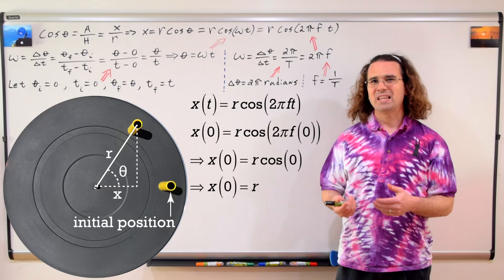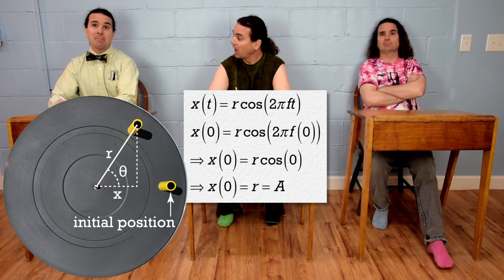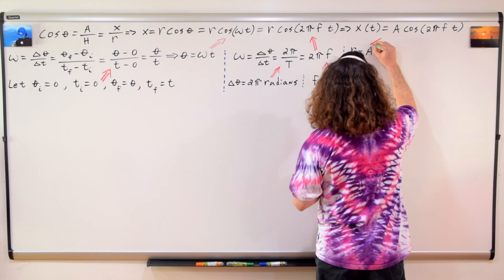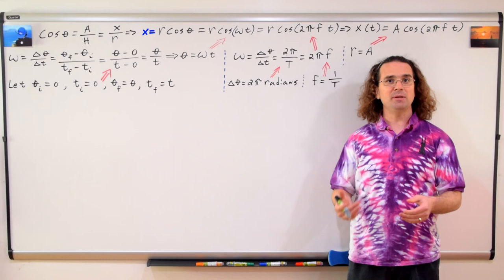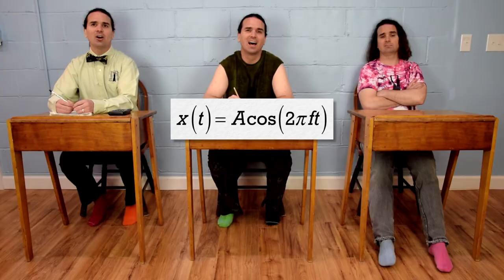Relating that to simple harmonic motion, can anyone tell me what that quantity would be? Oh, that is the amplitude. Right. The magnitude of the maximum displacement from equilibrium position is amplitude, capital A. In other words, the position as a function of time for an object in simple harmonic motion can be described by the expression: amplitude times the cosine of two pi times frequency times time.